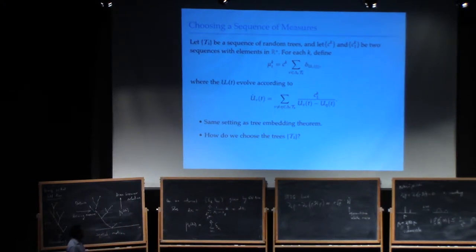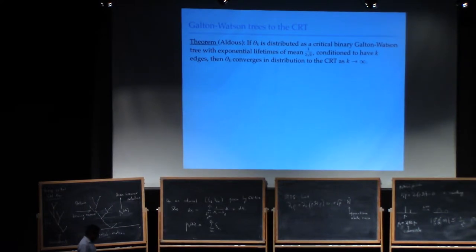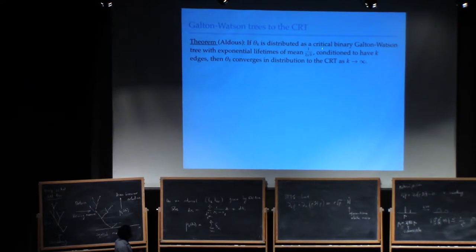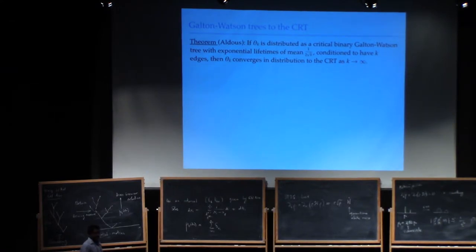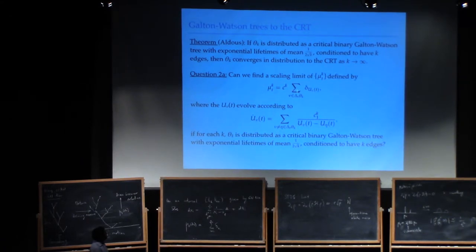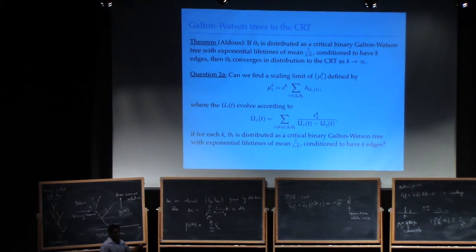There's a well-known theorem of Aldous that says if you choose trees distributed as critical binary Galton-Watson trees with exponential lifetimes of mean 1 over 2 square root of k, and these trees are conditioned to have k edges, then these trees converge in distribution to the CRT as k goes to infinity. The natural question is: if we choose driving measures determined this way and the trees are distributed as critical binary Galton-Watson trees, do the hulls converge to anything?